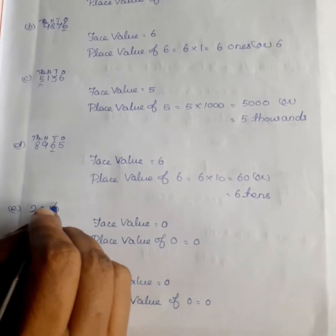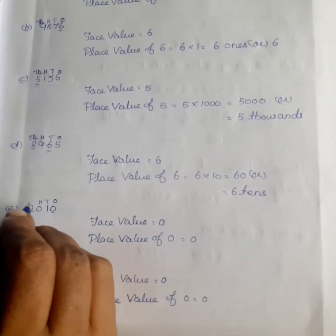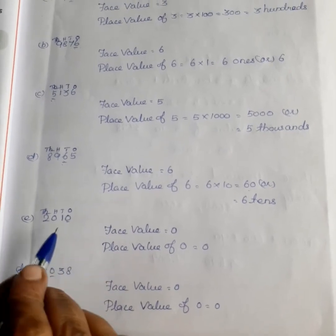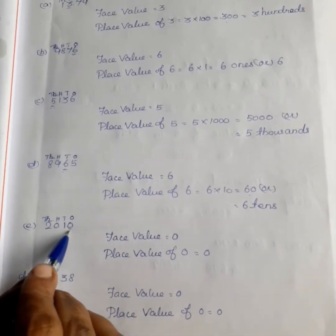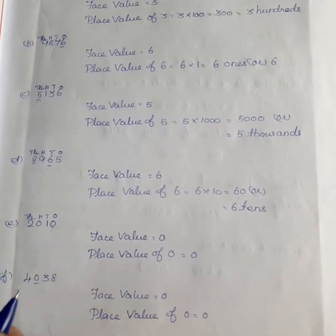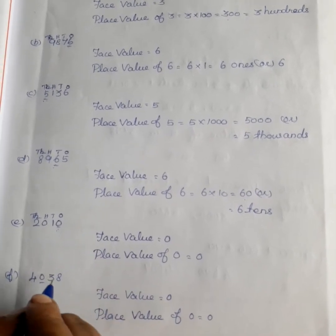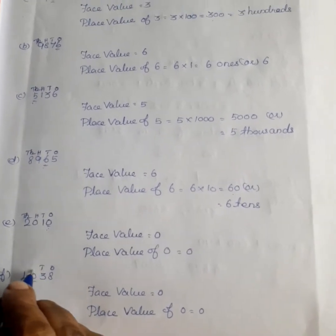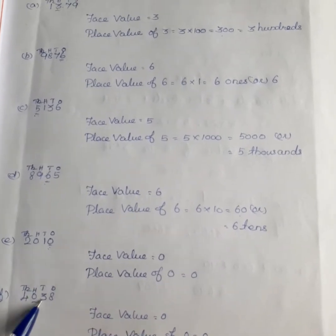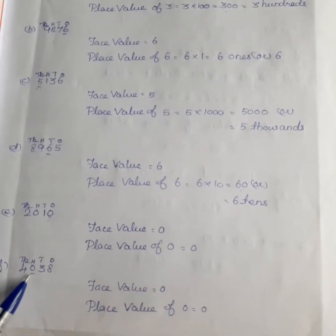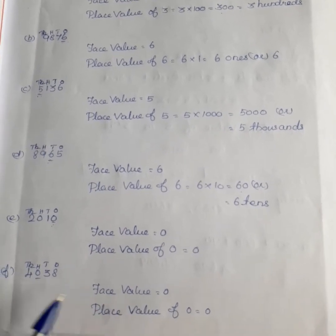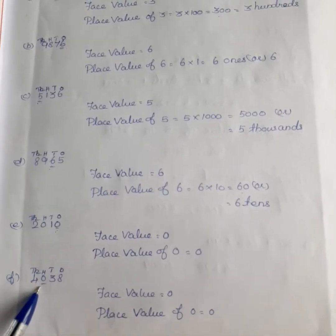Next, considering a digit 0 in the number — the face value of 0 is 0 and the place value of 0 is also 0. Similarly, at any place, the face value of 0 equals 0 and the place value of 0 equals 0.